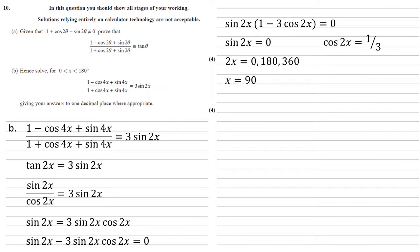If the bracket is equal to 0 then that would make cos 2x equal a third. Inverse cos on our calculator gives us that 2x is equal to 70.529 or 360 minus that which is 289.47. Halving that gives us 35.3 and 144.7.